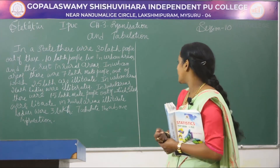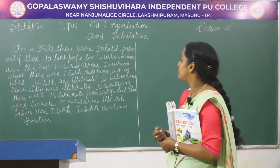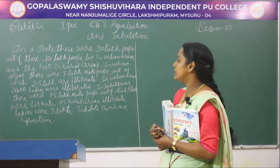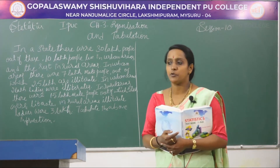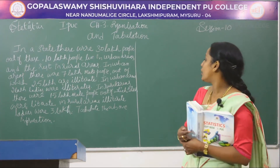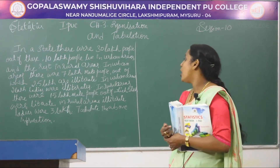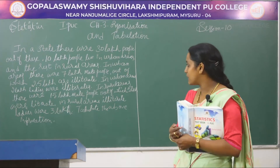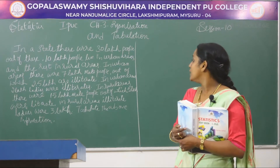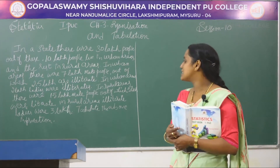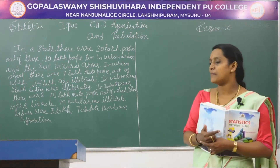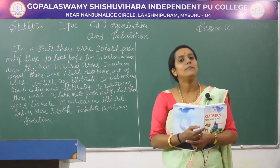In rural areas there were 15 lakhs male people, out of which 5 lakhs were literates. So we have 2 categories: literates and illiterates. In rural area out of 15 lakhs, 5 lakhs were literates. In rural areas, illiterate ladies were 3 lakhs, and this information we have to tabulate in the form of a manifold table.